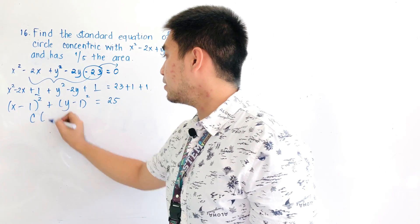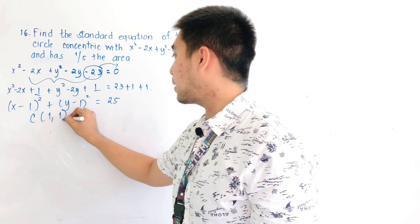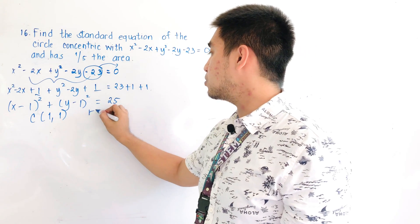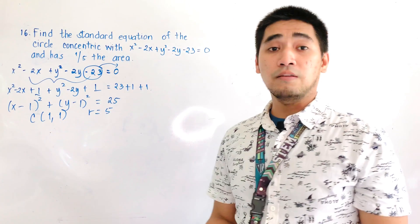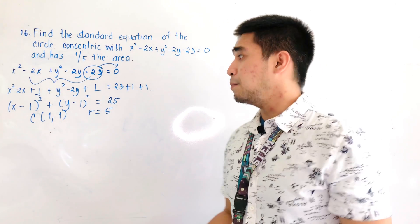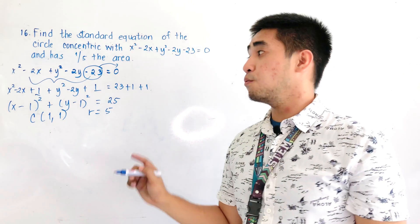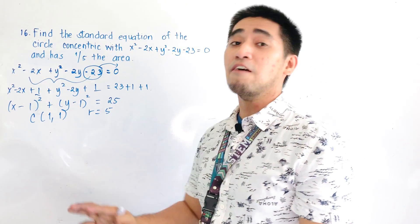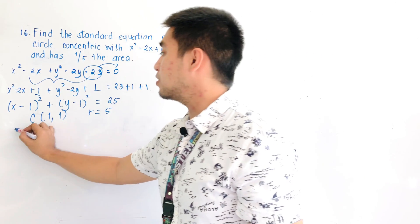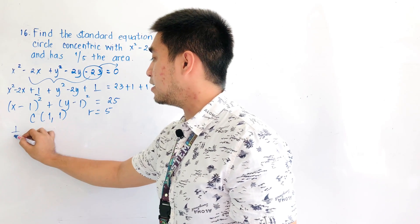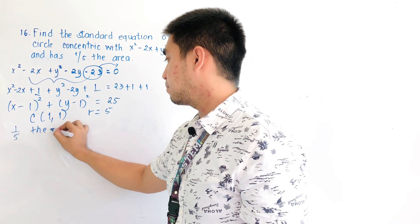Therefore, the center is located at (1, 1) and the radius is equal to 5. Remember that the new circle does not share the same radius, because there is another condition: it states that the second circle has just one-fifth the area.